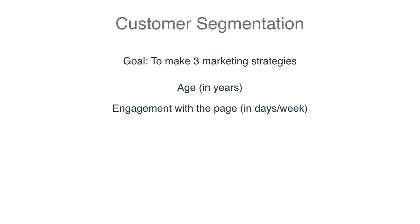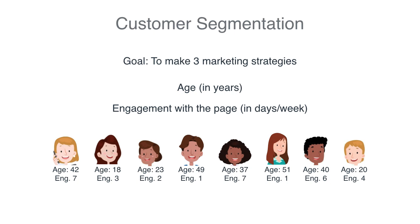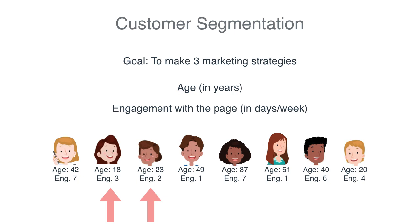One of the columns is demographic — age — and the other is behavioral, which is engagement with the page. The engagement can be a number from zero to seven since it's in days per week. We look at the potential customer base and there are eight people with their age and their engagement. By looking at this list of people, what groups can you come up with? We can take a while to eyeball it, but there's got to be something easier — something mechanical the computer can do automatically.